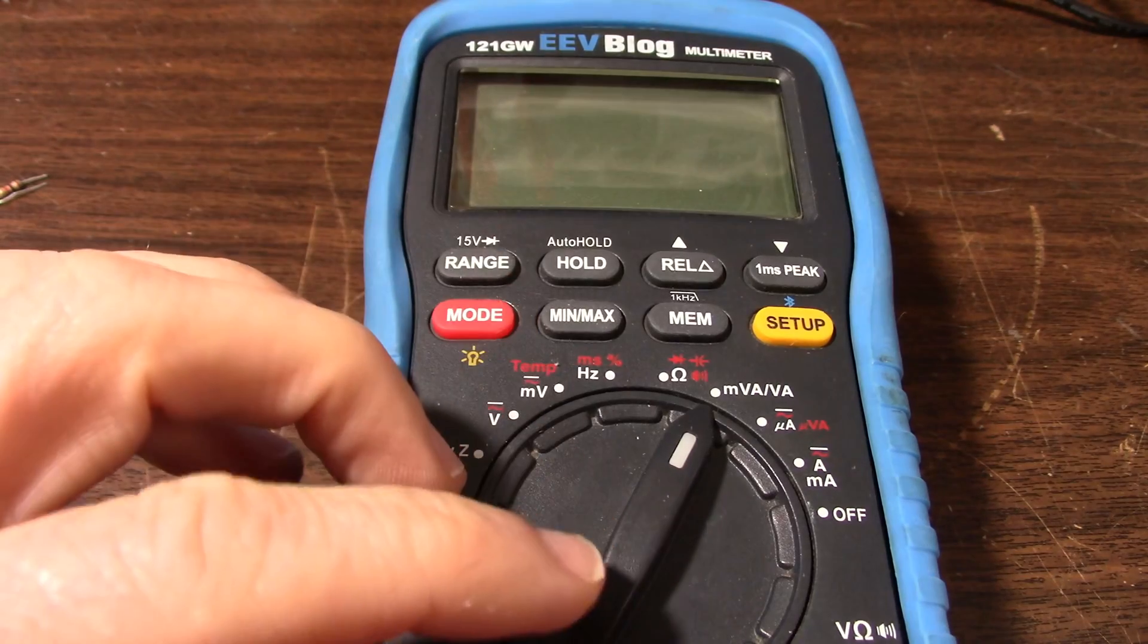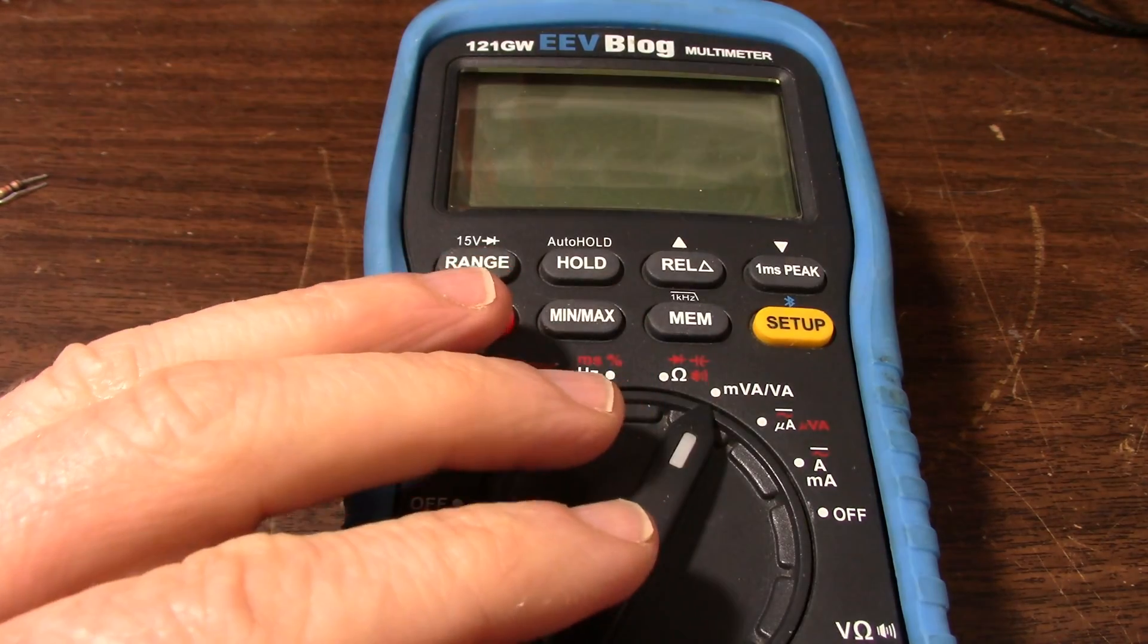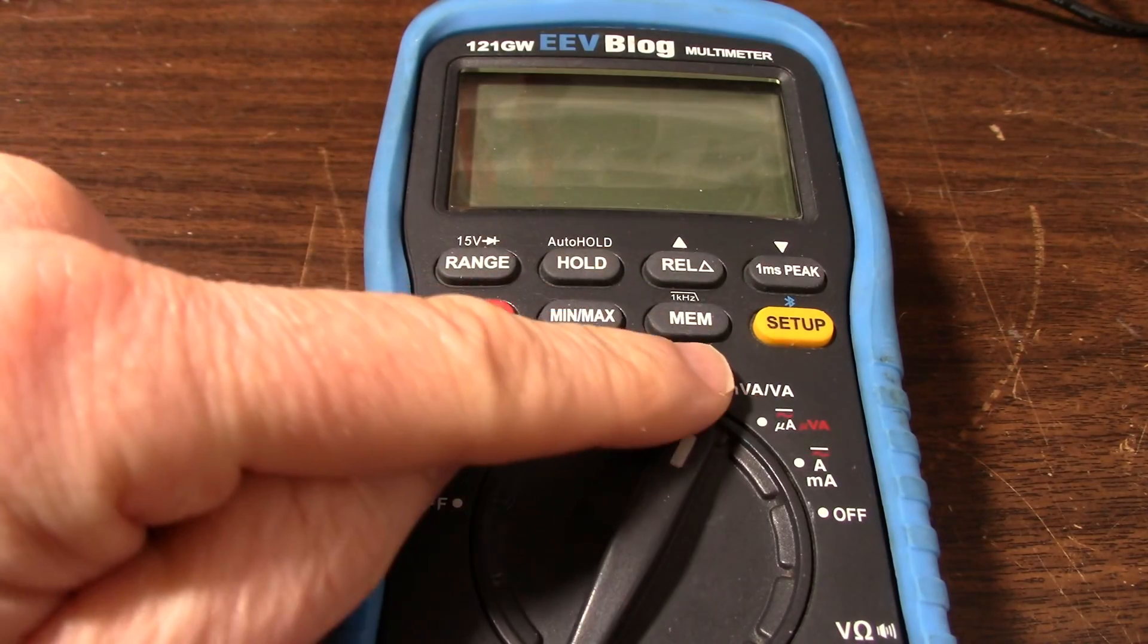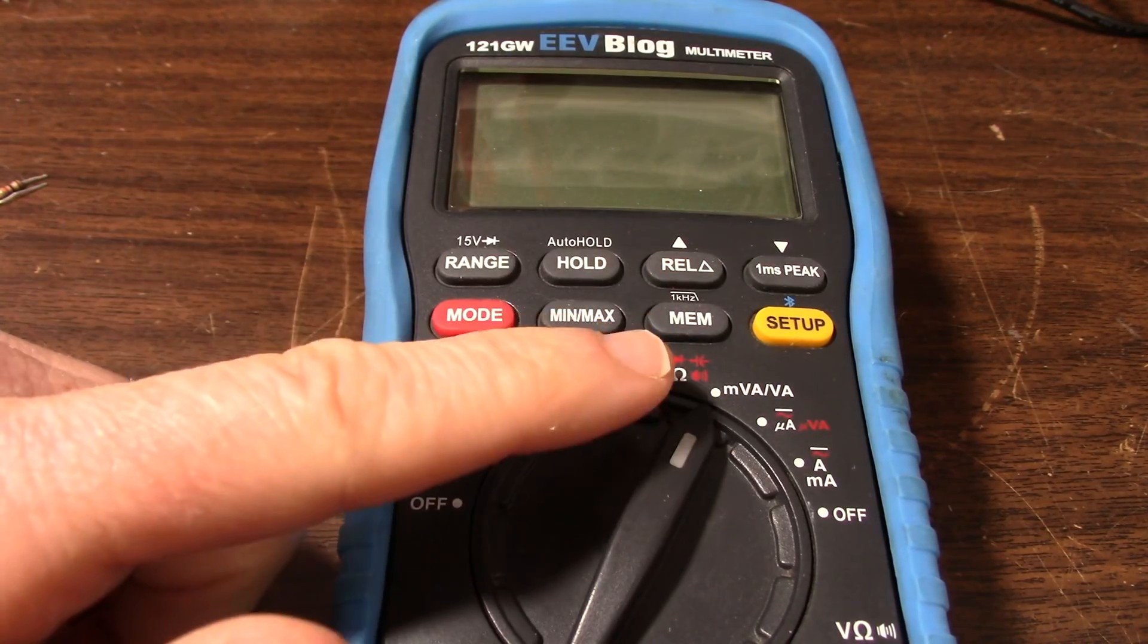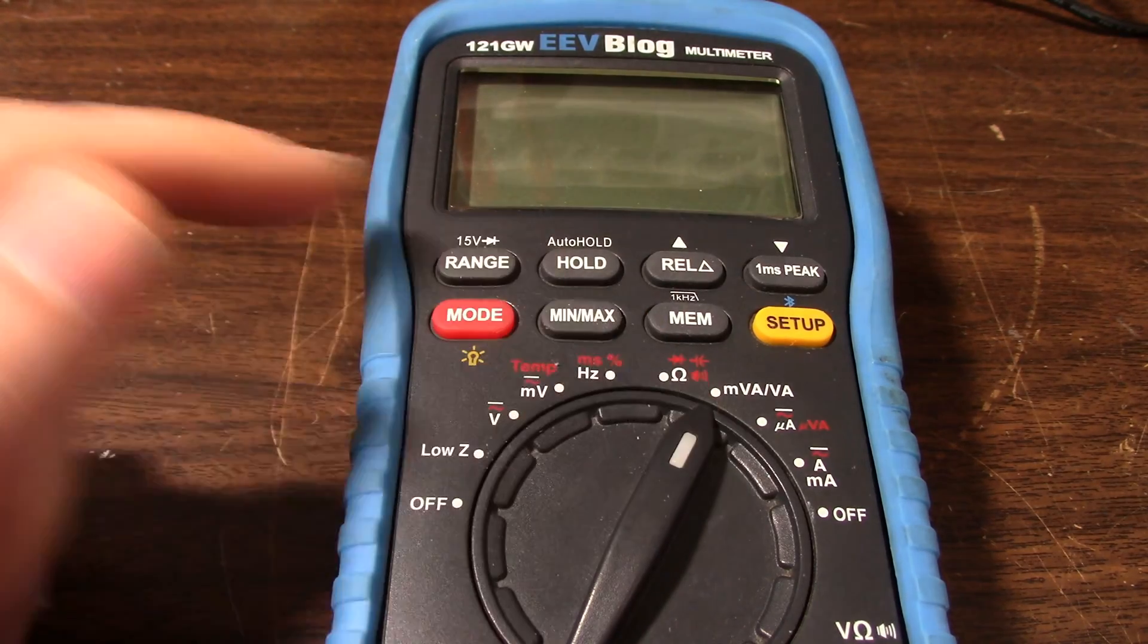This meter has a neat little feature that allows you to measure wattage. They call it the volt amp mode but you can measure DC and that will be watts and AC will be a volt amp measurement.